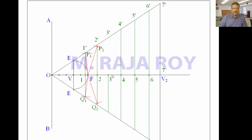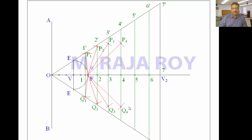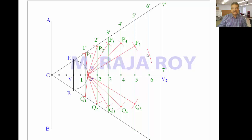Continue the same procedure: take 3–3 dash as radius with F as center, draw arcs on the 3–3 dash line; call these P3 and Q3. Take 4–4 dash radius with F as center; draw arcs on the 4–4 dash line — this is P4 and Q4. Take 5–5 dash radius with F as center; draw an arc — this is P5 and Q5. Take 6–6 dash radius with F as center; draw an arc — this is P6 and Q6.